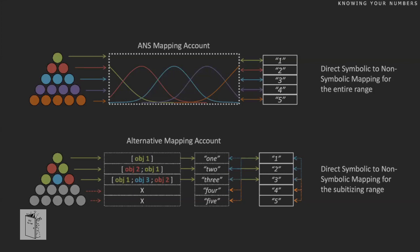That account didn't really work out — there were a lot of caveats. So we got a new one, the alternate account, which doesn't quite have a name yet. It says that we see exactly how many there are, perceive them as first, second, third, and so on, and connect those to the word. That's also what kids do: they connect the word to the quantity they can see without counting. After reaching the third or fourth, they learn through inferential learning — realizing the word list all means quantities — and then it goes really fast.